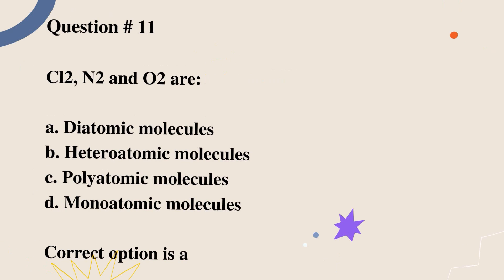Question number 11. Cl2, N2, and O2 are: A. Diatomic molecules. B. Heteroatomic molecules. C. Polyatomic molecules. D. Monoatomic molecules. Correct option is A.